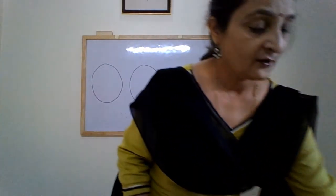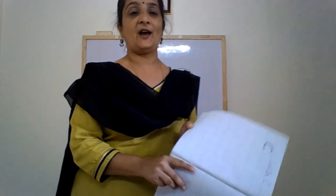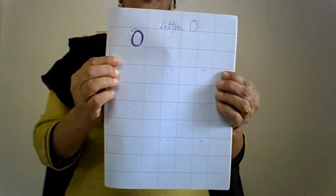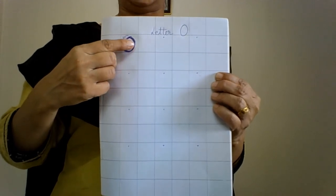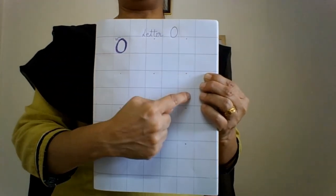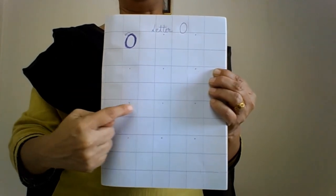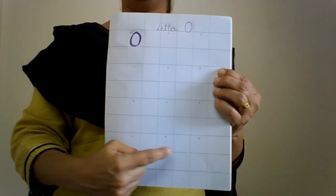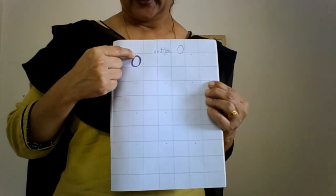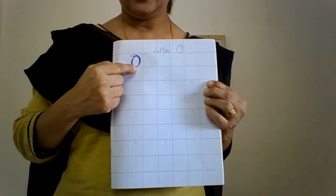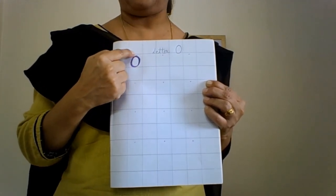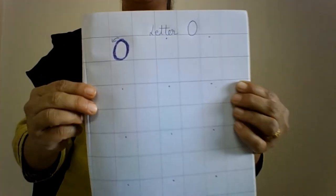After doing it, we are going to write in our notebook. We write outside the margin in alternate squares. We say aloud when we write — we say: down, semicircle, and we go up. Letter O.